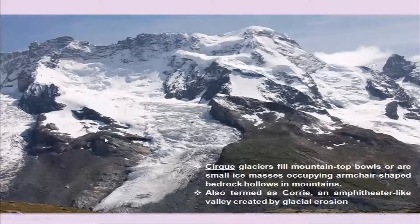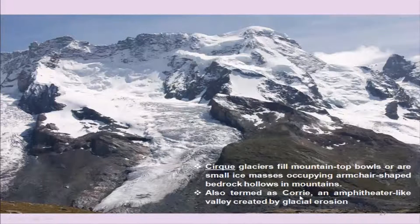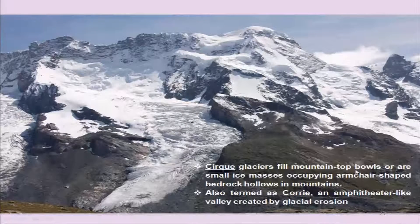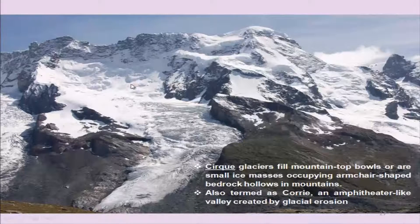This photograph shows several features. One is a cirque — glaciers fill mountain tops in bowl shapes, or small ice masses occupying armchair-shaped bedrock in mountains, also termed 'corrie' — an amphitheater-like valley created by glacial erosion. You have this armchair shape here; it is bordered by two arêtes on either side. It is a mountain top filled with snow, bowl-shaped, and also termed 'corrie' in some countries. This is part of your cirque.